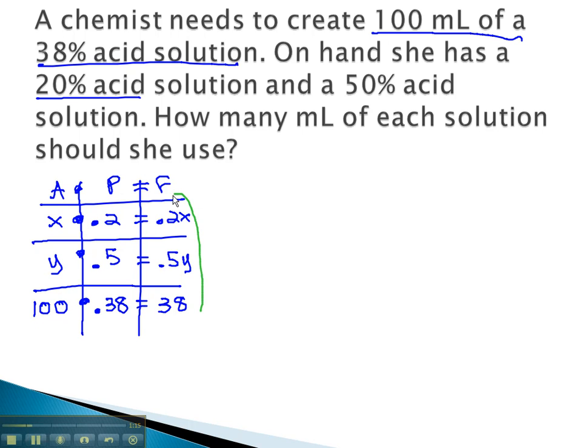As before, we can always pull an equation off the last column. This gives us 0.2x plus 0.5y equals 38. However, we need one more equation when there's two variables involved. This is where the first column comes in handy. x plus y, adding the two individual amounts, will equal the total amount of 100.